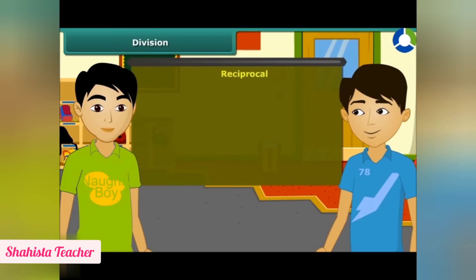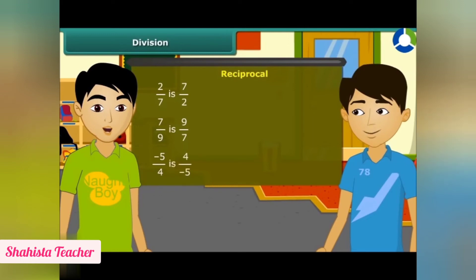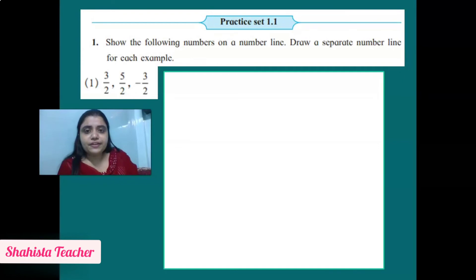The reciprocal of 2/7 is 7/2. The reciprocal of 7/9 is 9/7. The reciprocal of -5/4 is 4/(-5). When we divide one rational number by another, we multiply the first rational number by the reciprocal of the second.